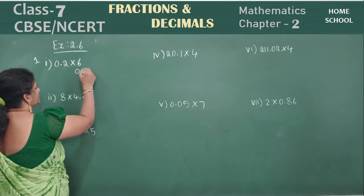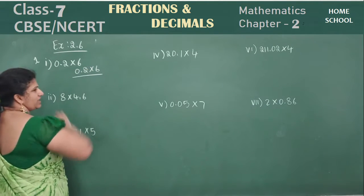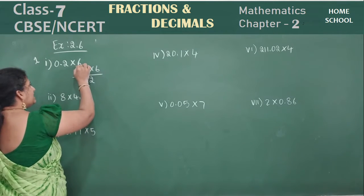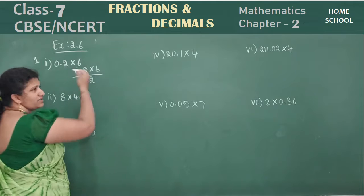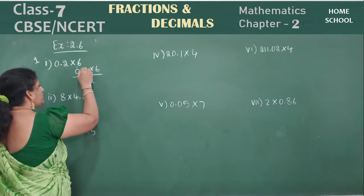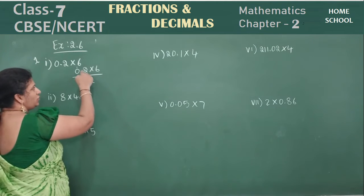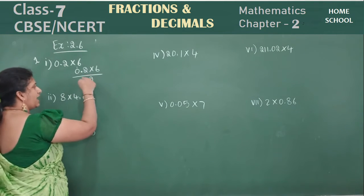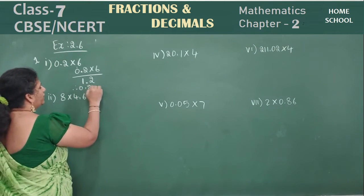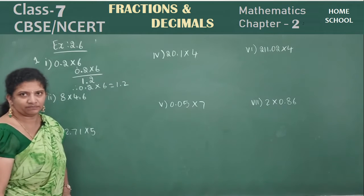How do you do this one? 0.2 into 6. 6 twos are 12. 6 zeros are 0, 0 plus 1 will be 1. The decimal point is after 1 decimal value, so in your answer also, after 1 value, put a point. Therefore, 0.2 into 6 is equal to 1.2.